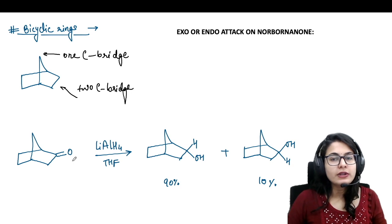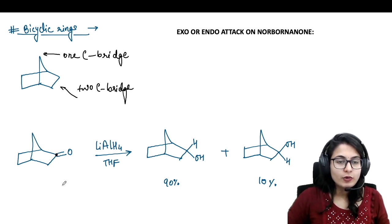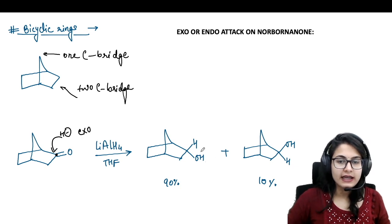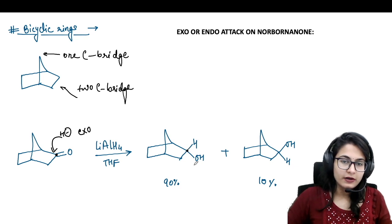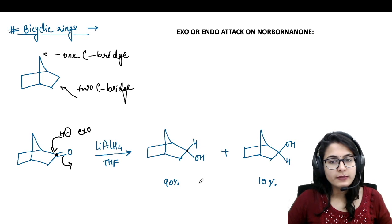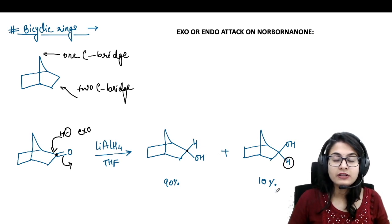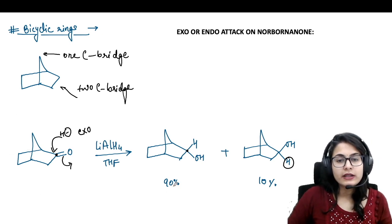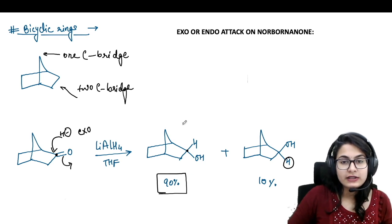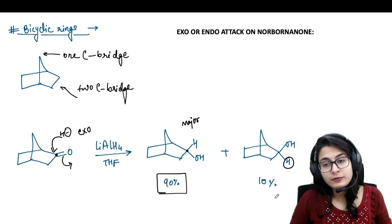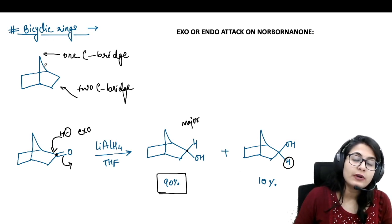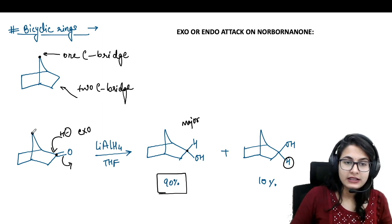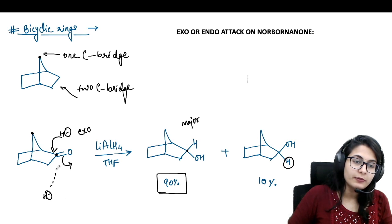Looking at the first reaction: the norbornone system is attacked by a hydride. If the attack is from the top, we call it the exo attack — hydrogen is on top and OH goes below. If hydrogen attacks from below, we call it the endo attack and OH goes above. To predict which is major, we look at steric hindrance. When attacking from the top, you face steric hindrance from only one carbon.